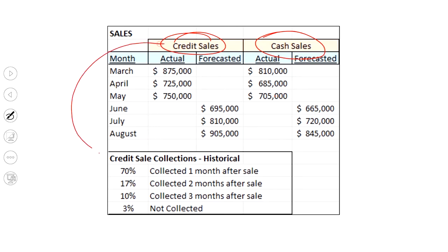Credit sales are a different animal, though. Look down here. Historically, we find we don't start collecting these amounts until the first month after the sale. So if we were looking at $750,000 in May, we'd be collecting a big chunk in June, a little bit more in July, a little bit more in August.